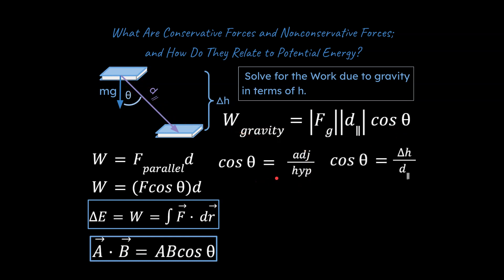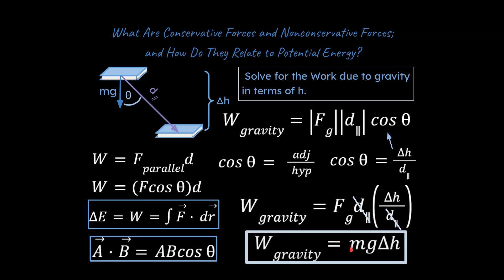So cosine of any angle is adjacent over hypotenuse. In this case, that would be delta h over d parallel. So what we're going to do is go ahead and take this, sub it in for cosine of theta, and what we end up with is this. Now, notice your d parallels can cancel each other out, and so we simplify, and we end up with the exact same answer that we had before. So is that a coincidence?